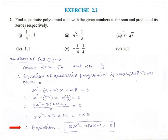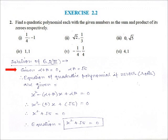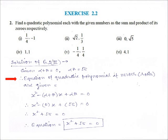Third part: given alpha plus beta is equal to 0 and alpha into beta is equal to √5.